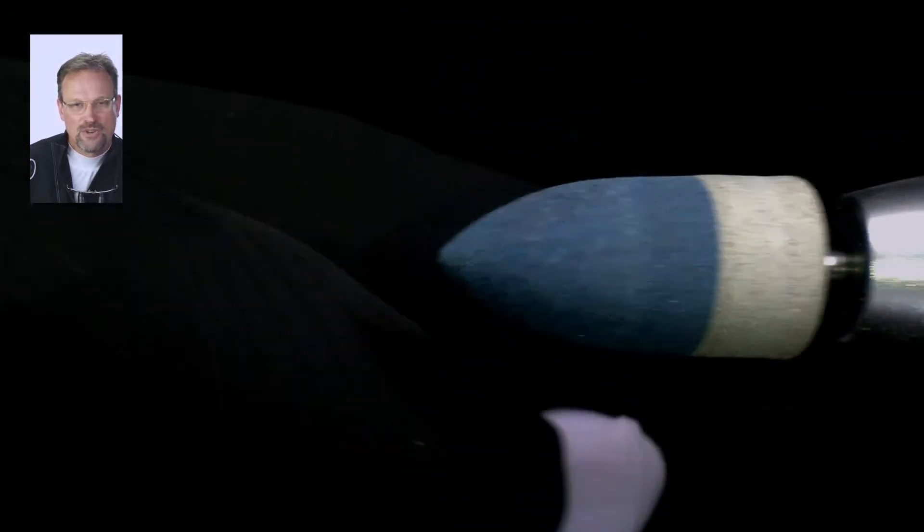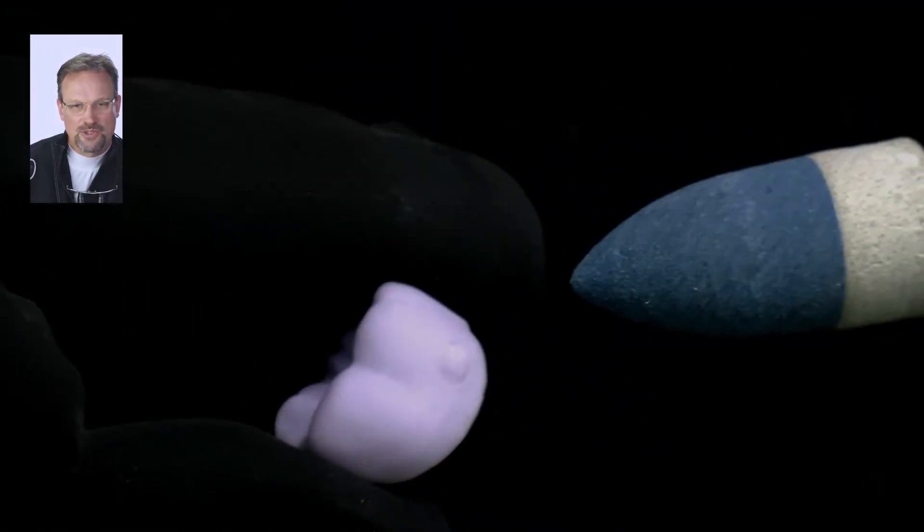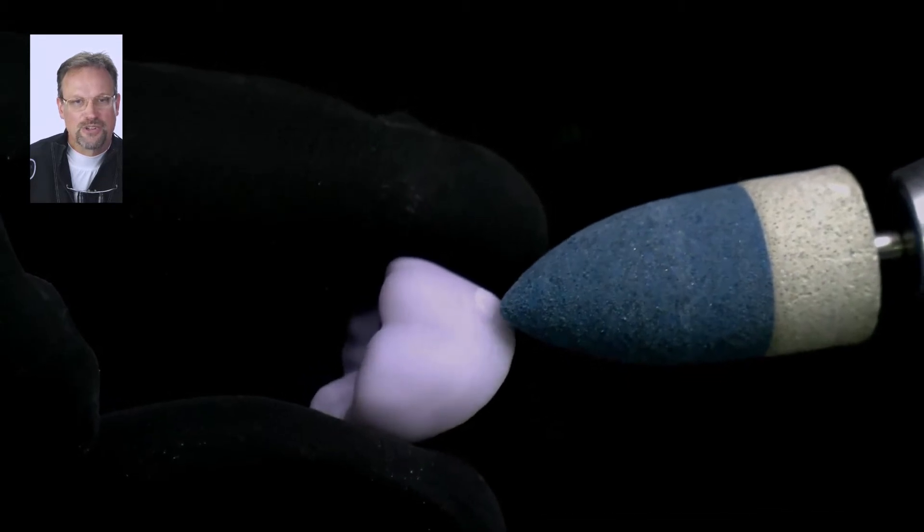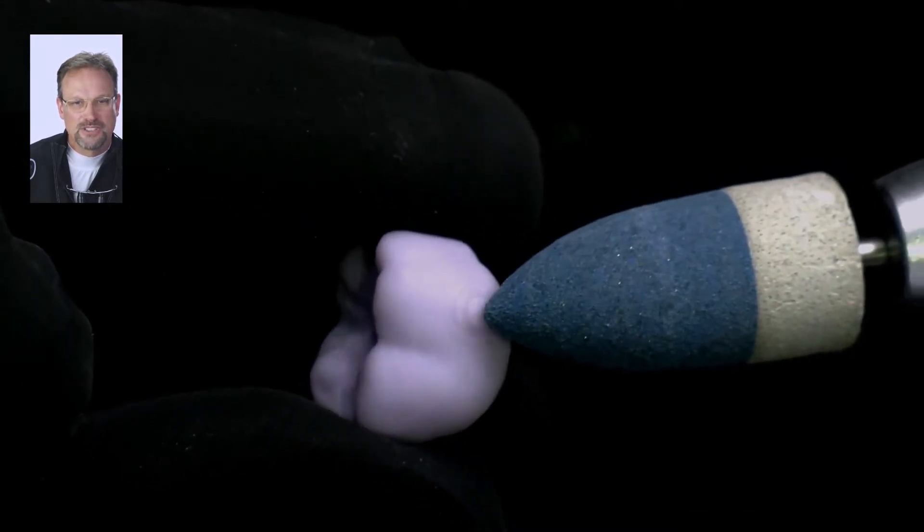like this lithium disilicate. This is Emacs from Ivoclar Vivident. We typically have a sprue that looks something like this, and this is a pretty robust sprue that's on here.